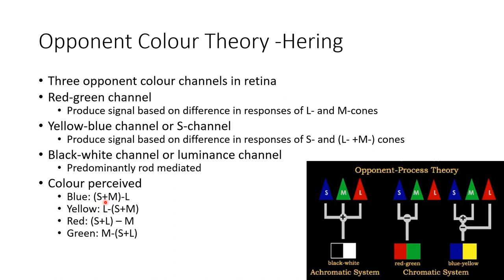Now let us see how colors are perceived based on opponent color theory. Blue is perceived when S and M cones are stimulated while L cone is not firing. Yellow is perceived when L cone is stimulated while S and M cones are not firing. Red color is perceived when S and L cones are stimulated while M cone is not firing. Green is perceived when M cone is stimulated while S and L cones are not firing.